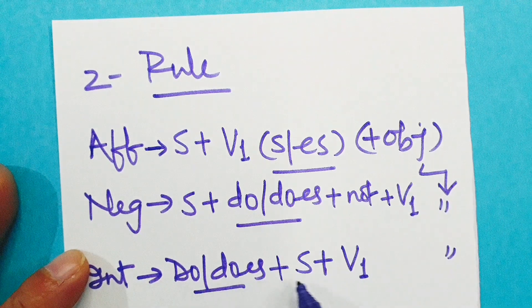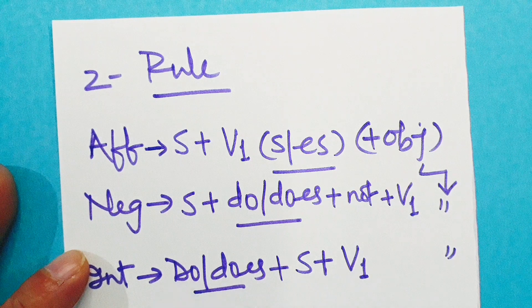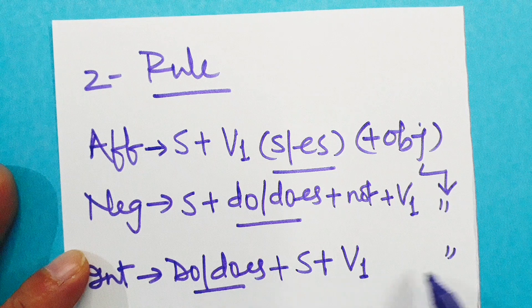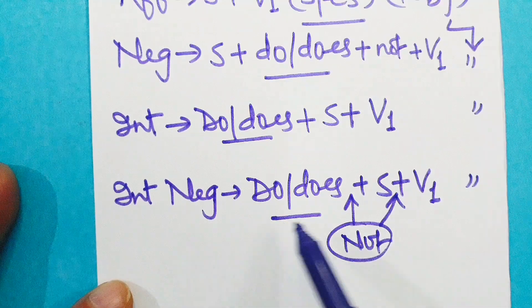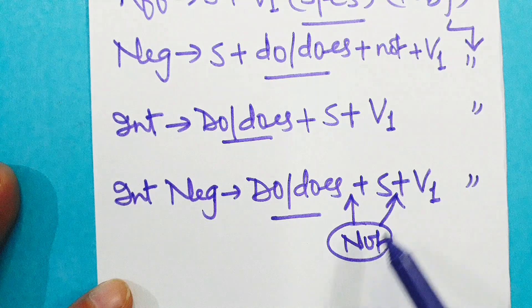Now negative: subject plus do plus not plus V1. They don't write a letter. Interrogative: do or does plus subject plus V1. Obviously we will take do. Why? Because they is the subject, third person plural. Do they write a letter?